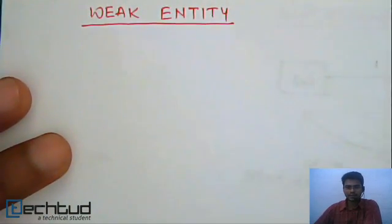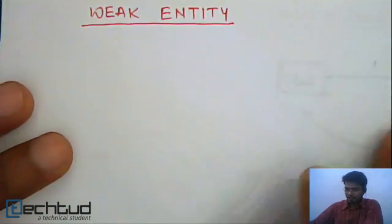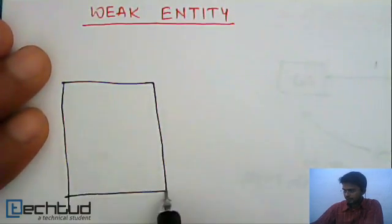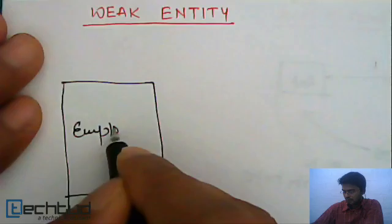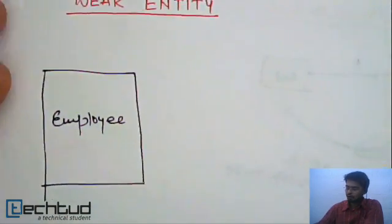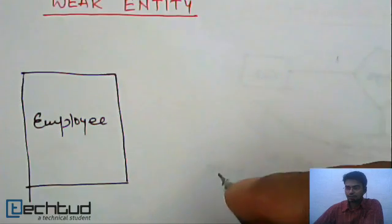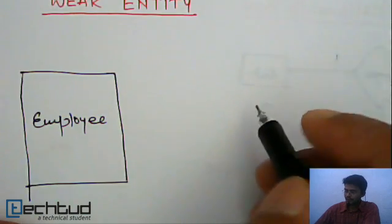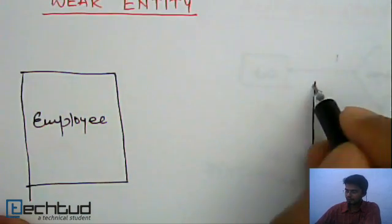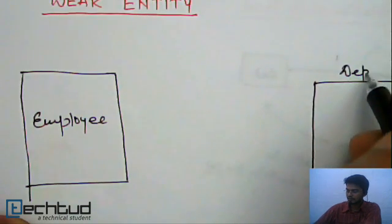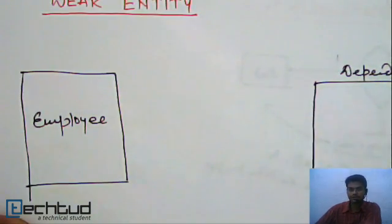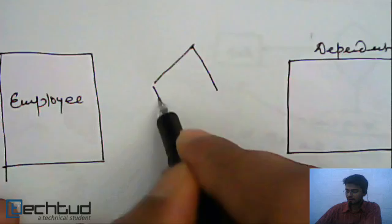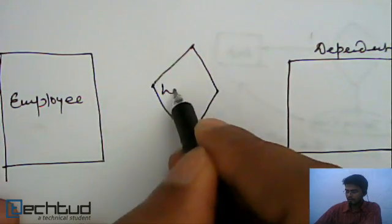Let's understand it with an example first and then we will revise the definitions. Consider this entity type: employee. Each employee — the company is also taking care of the dependents of an employee. So there will be an entity called 'dependent', and there will be a relationship among these, like employee 'has' dependent.